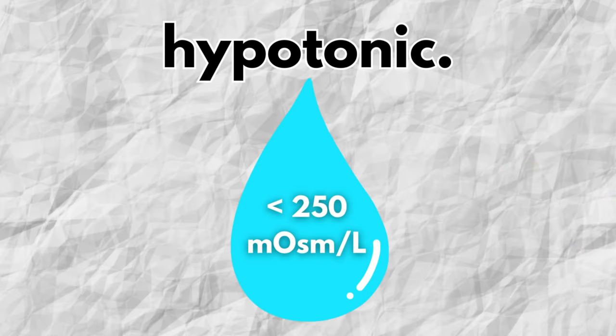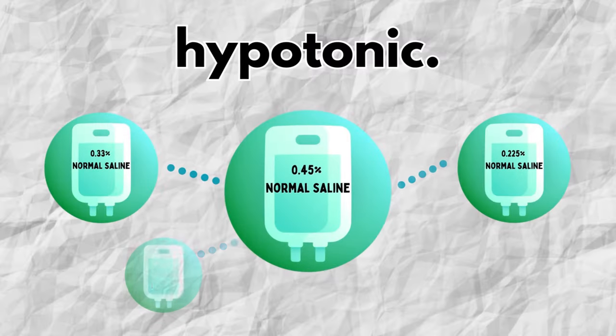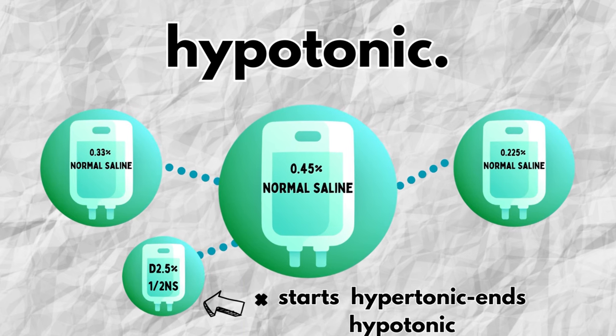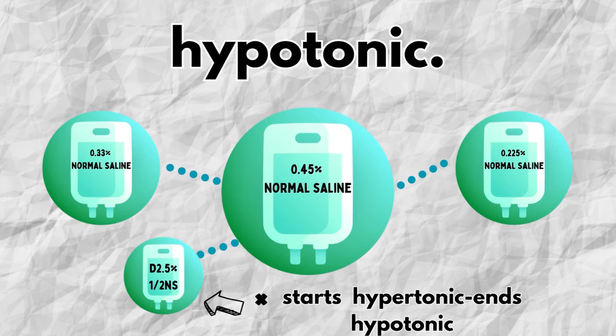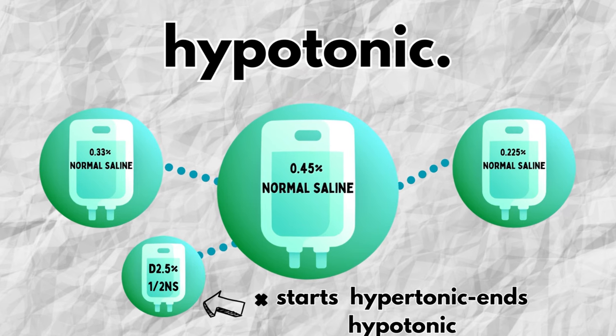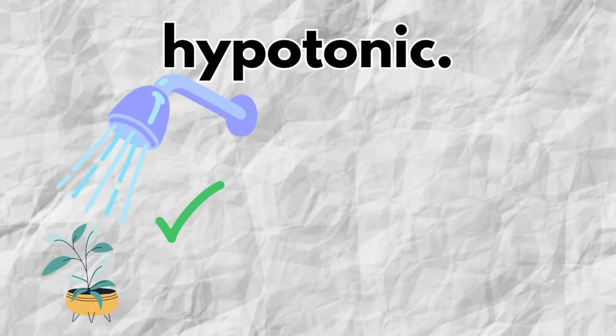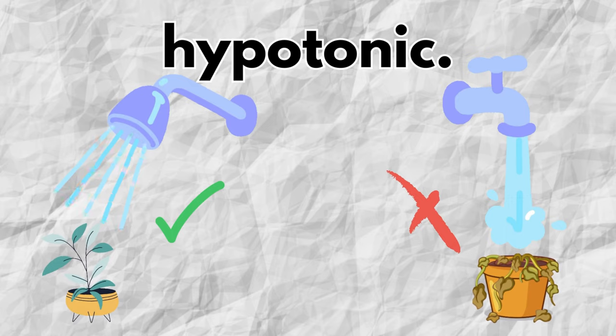Hypotonic solutions have an osmolarity or total particulate content that's less than 250 milliequivalents per liter. Hypotonic crystalloid solutions include half normal saline, 0.33% sodium chloride, 0.225% sodium chloride, and D2.5 sodium chloride or dextrose 2.5 in half normal saline. These are used because they encourage the movement of fluid back into the cells, so generally they're prescribed to provide hydration and to correct mild dehydration, helping restore fluid volume without overloading the body with too much salt.